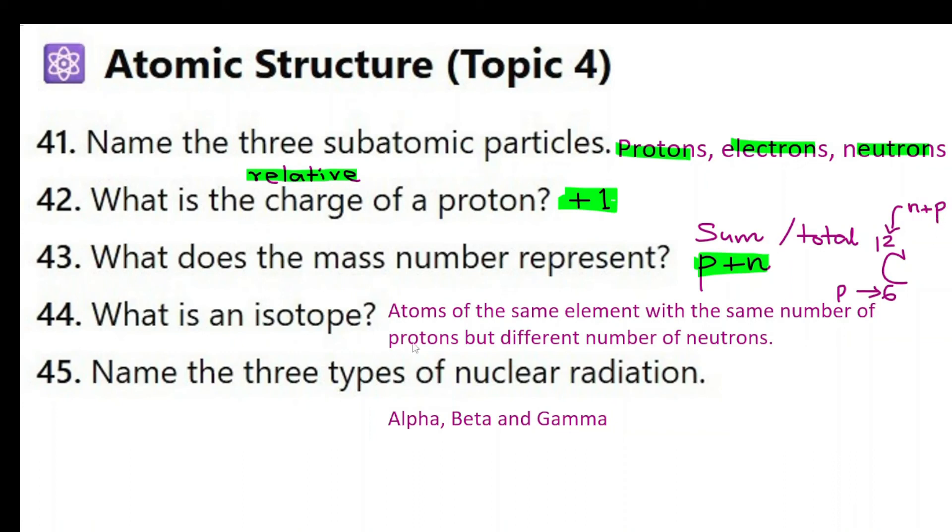What is an isotope? Atoms of the same element with the same number of protons but different number of neutrons. Now imagine carbon 6-12 and carbon 6-14. Here they are the same element carbon, same number of protons obviously. But the mass numbers are different because in this one the number of protons is 6, the number of neutrons is 12 take away 6, we have 6 neutrons. Here number of neutrons is 14 take away 6 and you get 8 neutrons. So same number of protons, 6 each, but the number of neutrons are different so these are isotopes. Name the three types of nuclear radiation. Alpha radiation, beta radiation and gamma radiation.